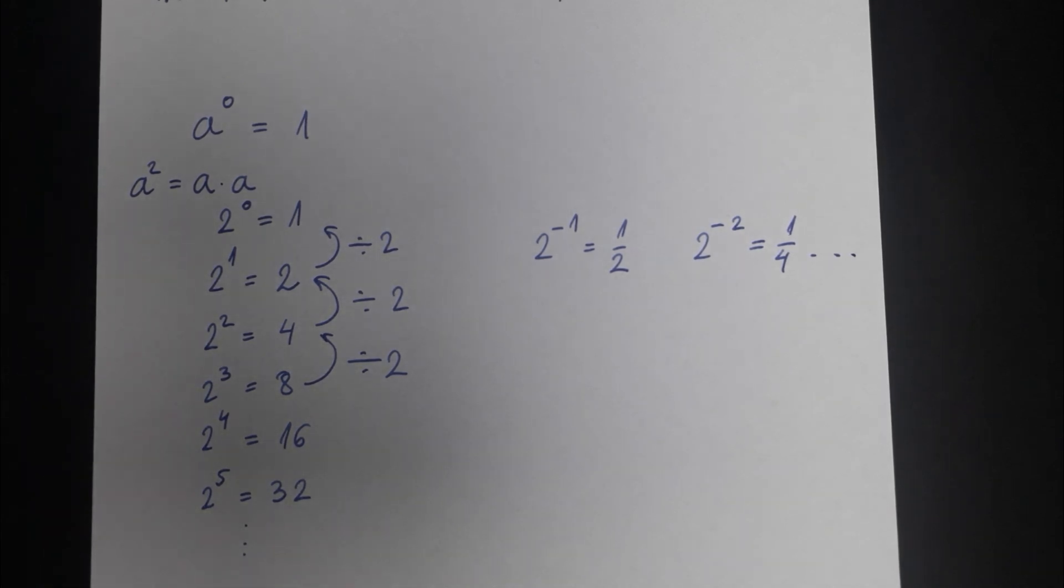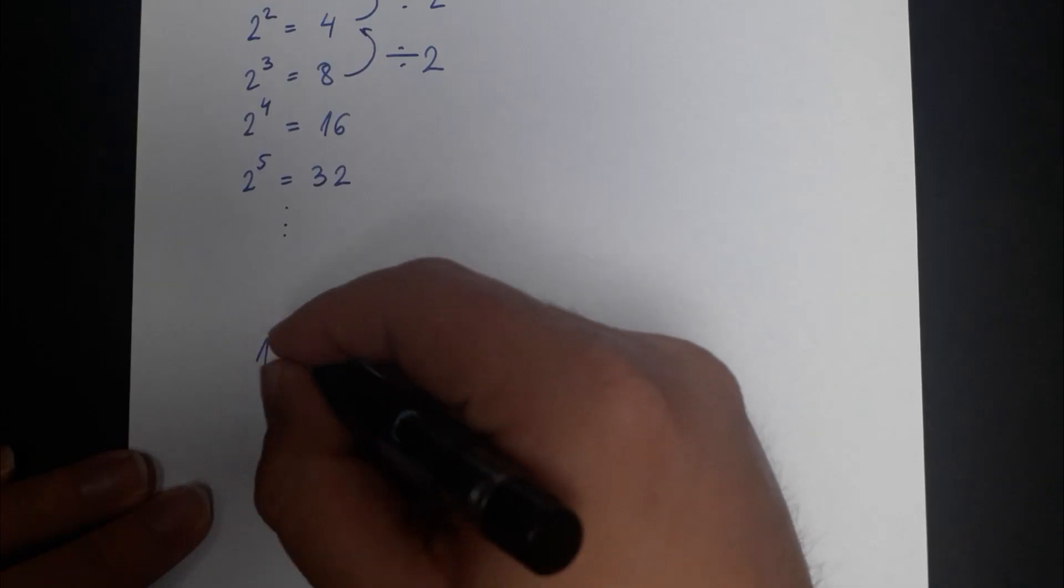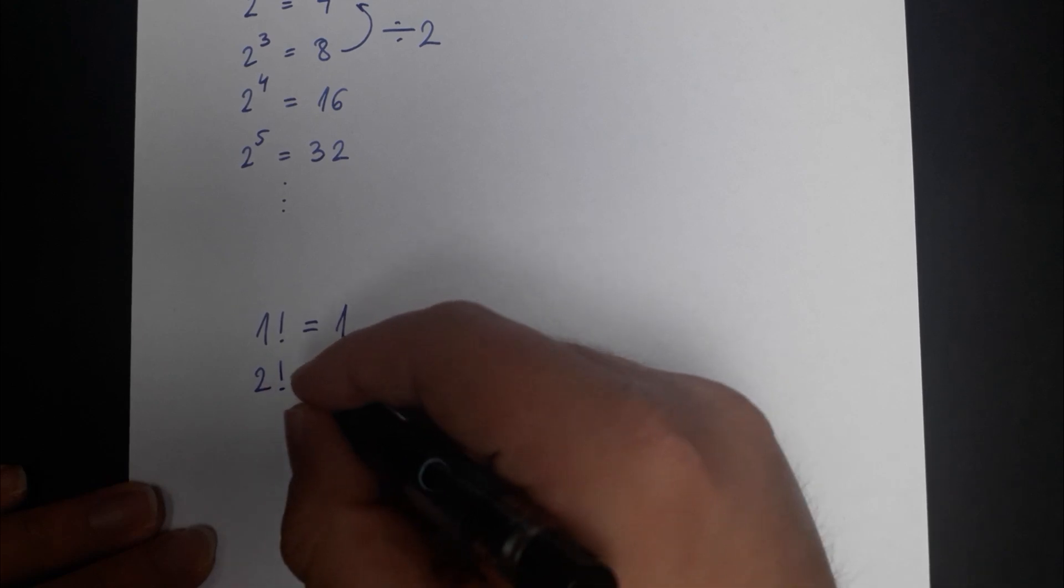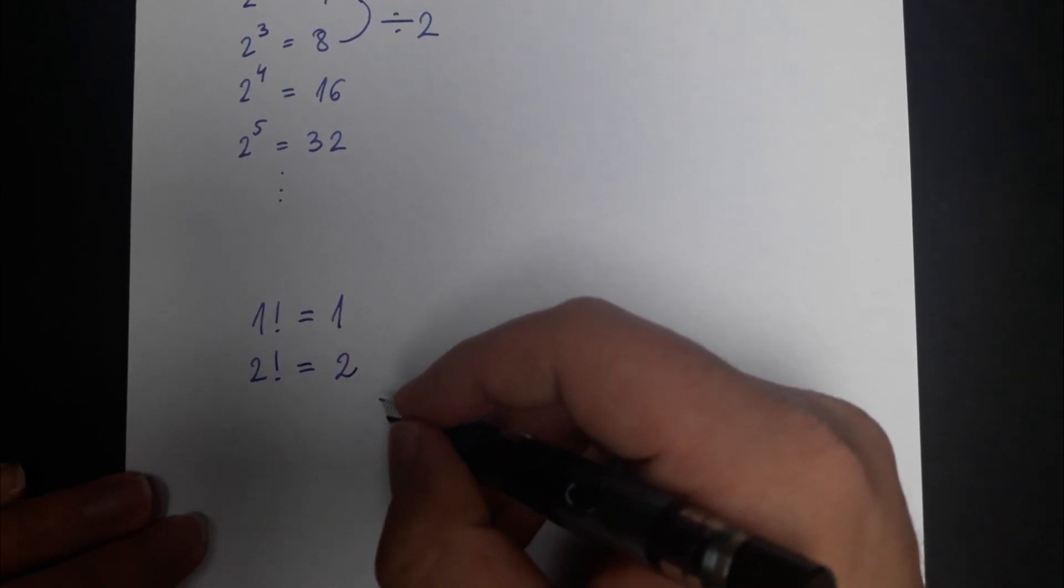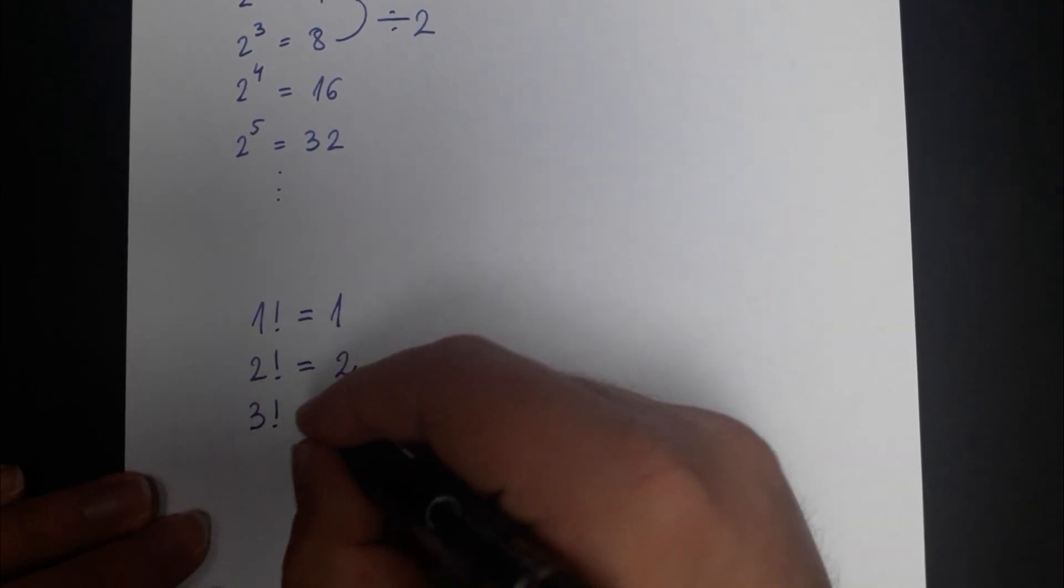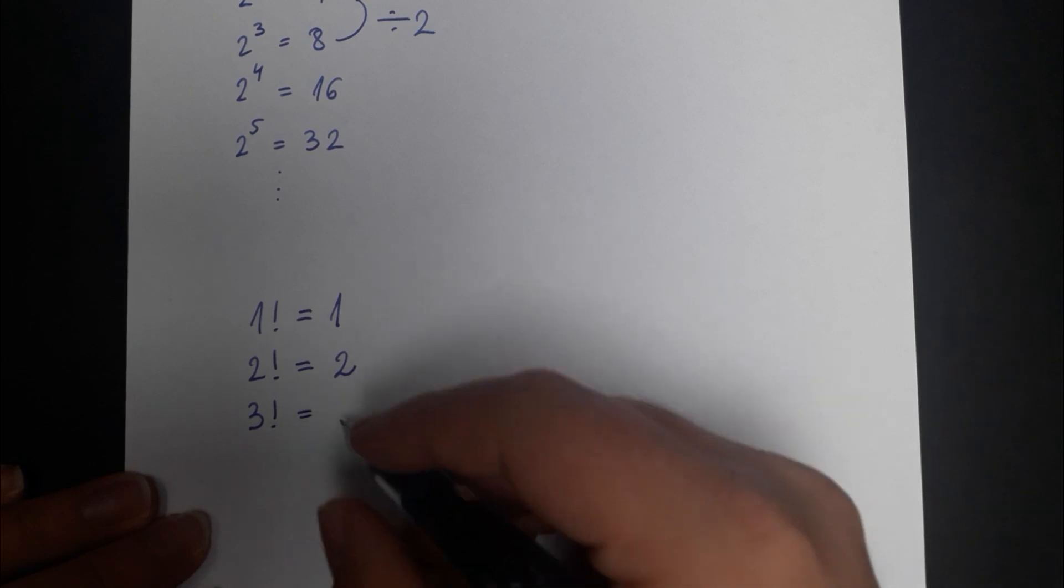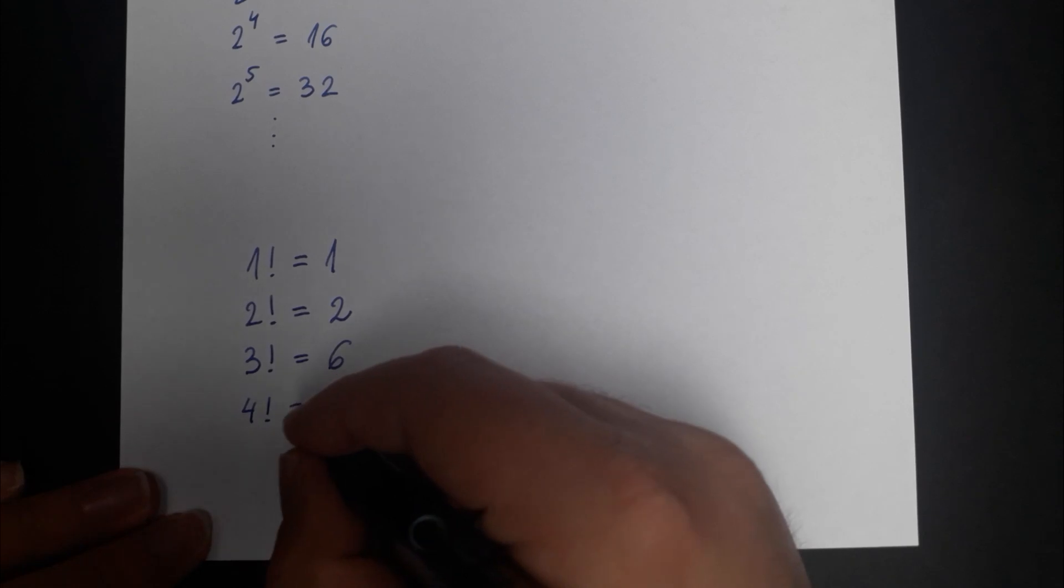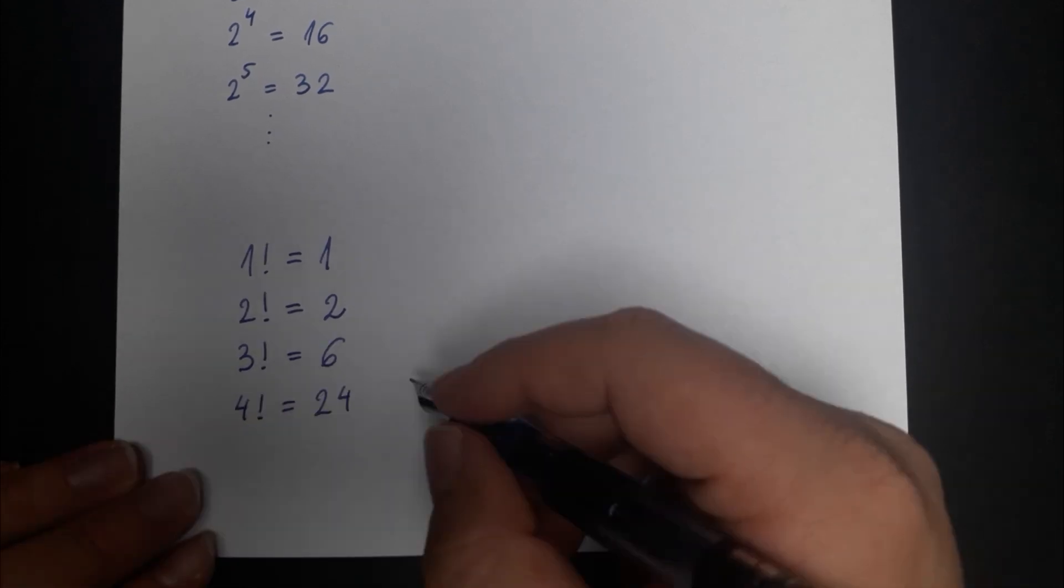Can you argue why 0 factorial is equal to 1? 1 factorial is equal to 1. 2 factorials we know to be equal to 2. 3 factorials is equal to 3 times 2 which is 6 and 4 factorial is equal to 24. So this time how do I go backwards?